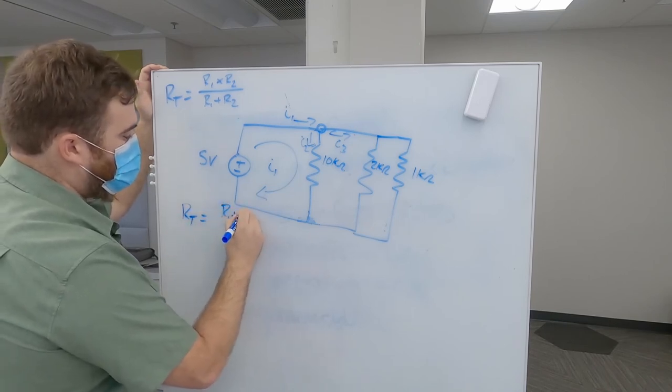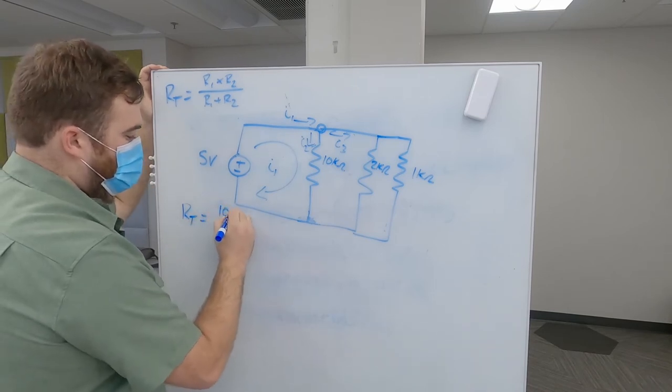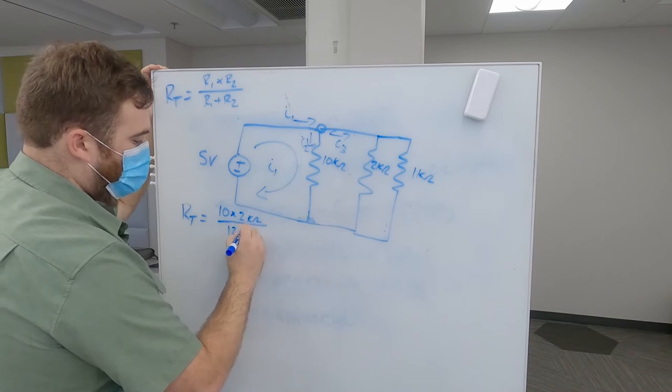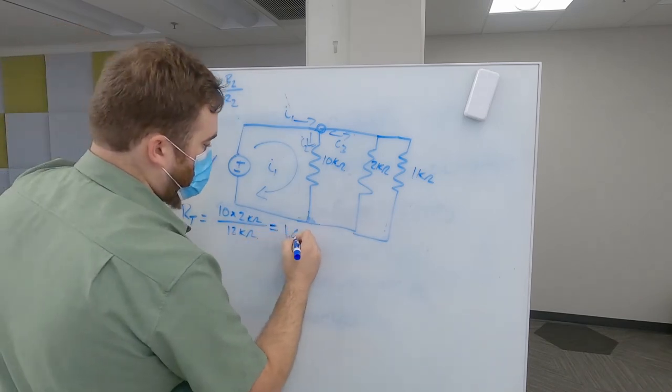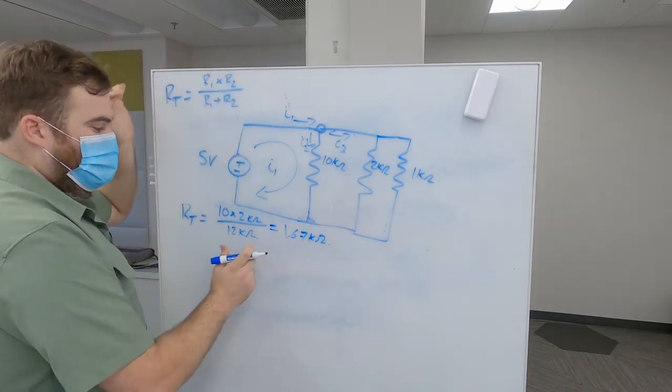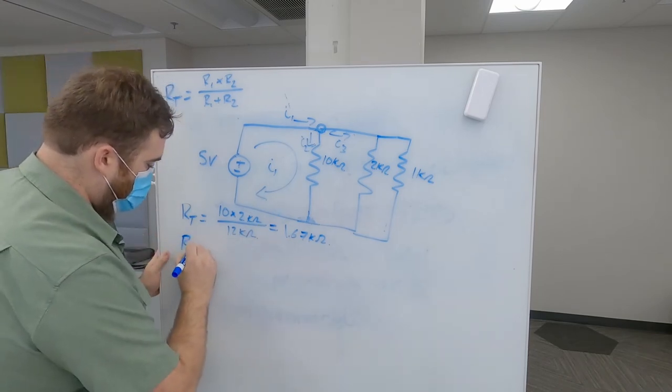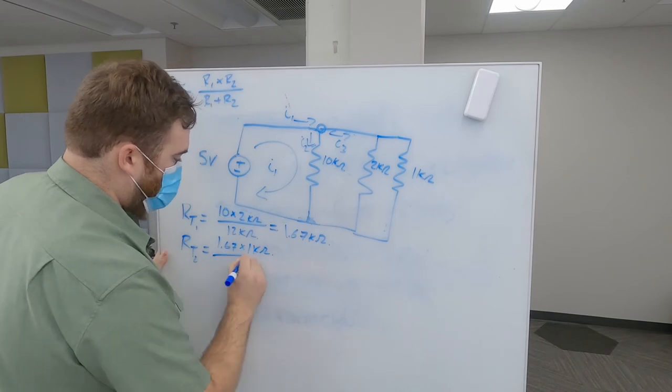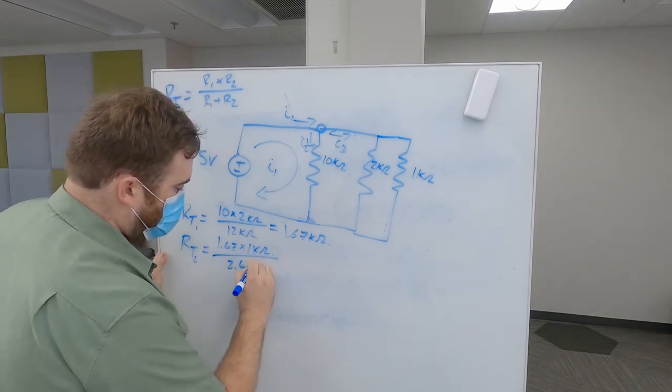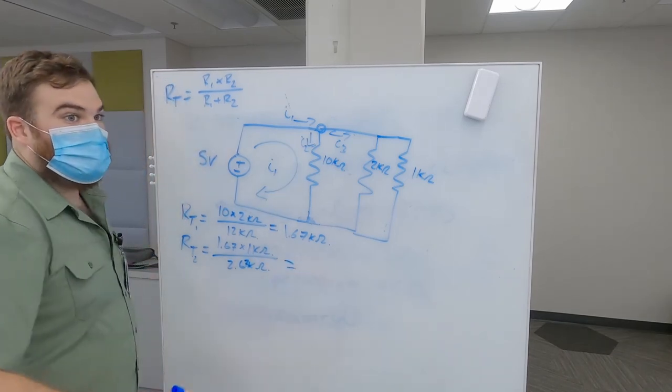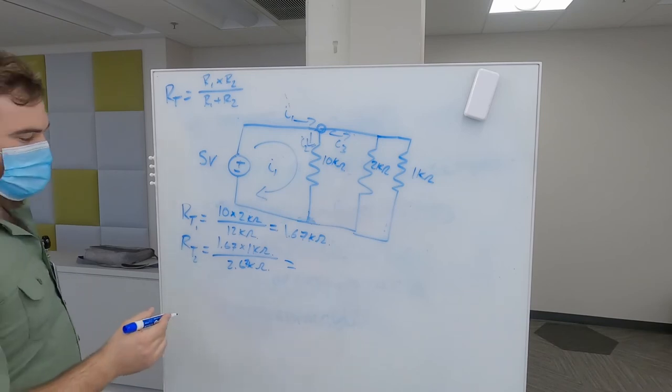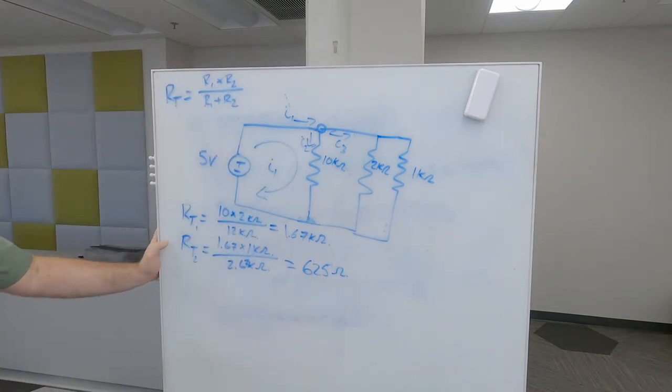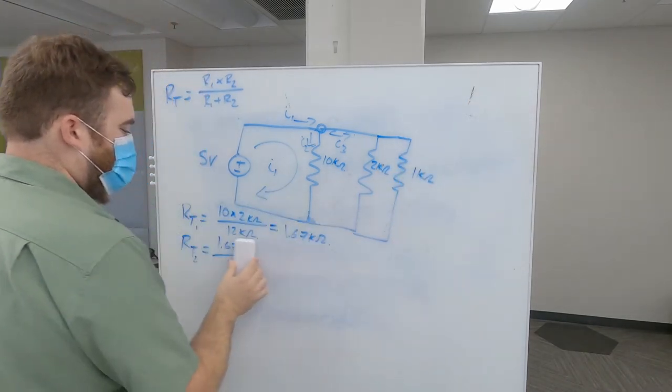Rt is R1 plus R2. Well, I'm just going to write them in here. It's easier that way. This is going to be 10 times 2 kilohms divided by 12 kilohms. Just to simplify a little. So that gives us 1.67 kilohms. And now we can treat that as our R1 for the next set. So that would be Rt. Rt equals 1 and 2 is 1.67 times 1 kilohm divided by 2.67 kilohms. What does that give you? So that gives you 625 ohms. So you can do it that way. But I find that way less good.